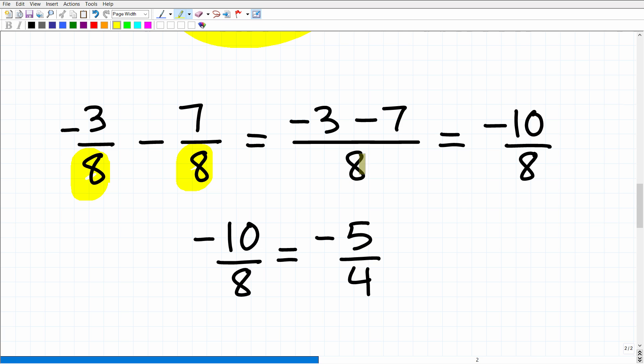So here they are the same. We have eight as our denominator. So we're going to subtract negative three minus seven. We can see that right there. So negative three minus seven is, of course, negative ten, and that's going to be over eight. So negative ten over eight. We can reduce that fraction down to negative five-fourths.